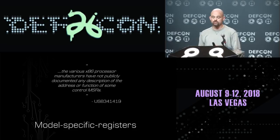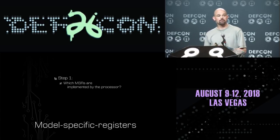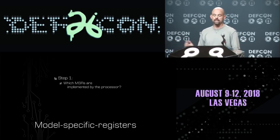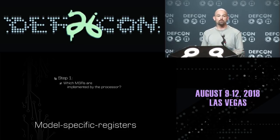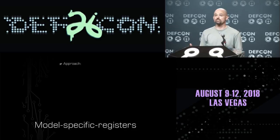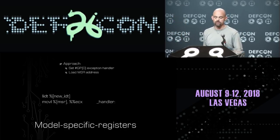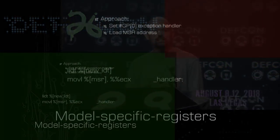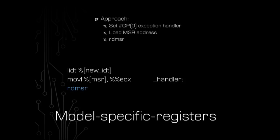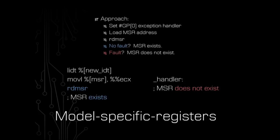MSRs — model-specific registers — are 64-bit control registers used for debugging, performance monitoring, cache and feature configuration. Unlike general X86 registers, they're accessed by address — from 0 to 4 billion — by loading an address into ECX and executing read MSR or write MSR instructions. To figure out which MSRs are actually implemented, you set the general protection exception handler to a handler under your control, load an MSR address into ECX, and execute read MSR. No fault means the MSR exists; a fault means it doesn't.